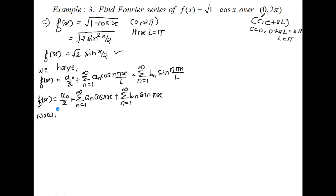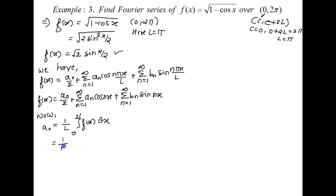Now to find the Fourier coefficients A0, An, Bn. The value for A0 is (1/l)∫₀²ˡ f(x) dx. Our c is always 0, so we write 0 to 2l. Putting l = π, this becomes (1/π)∫₀²π f(x) dx, and what is the function? It is √2·sin(x/2).